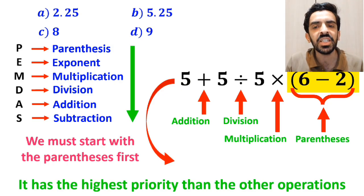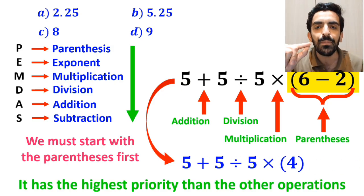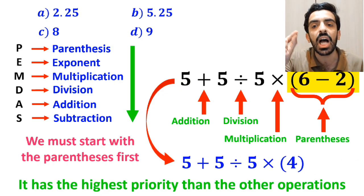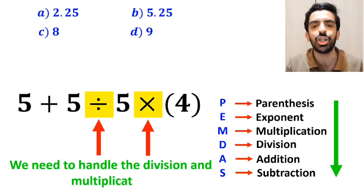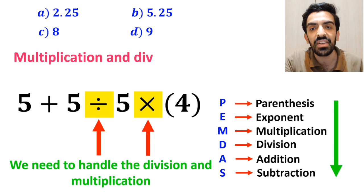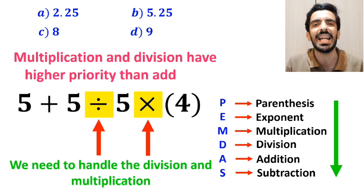So, instead of this expression, we can write 5 plus 5 divided by 5 then times 4. And the next step, we need to handle the division and multiplication, because multiplication and division have a higher priority than addition.